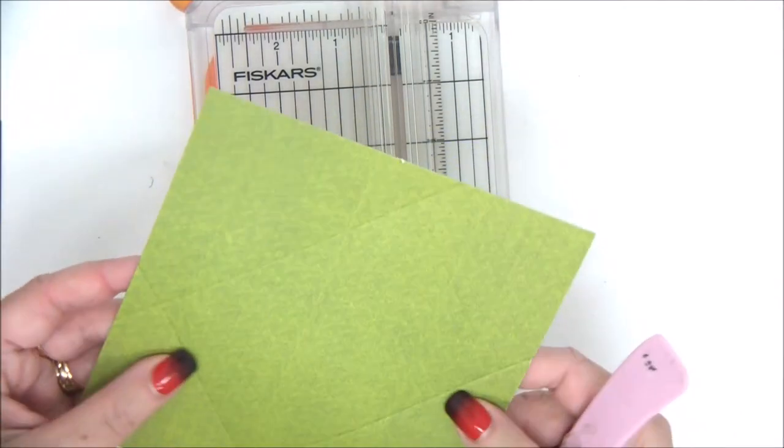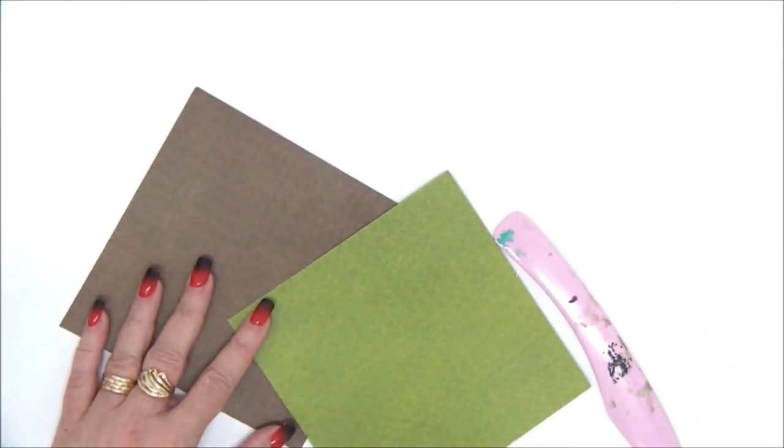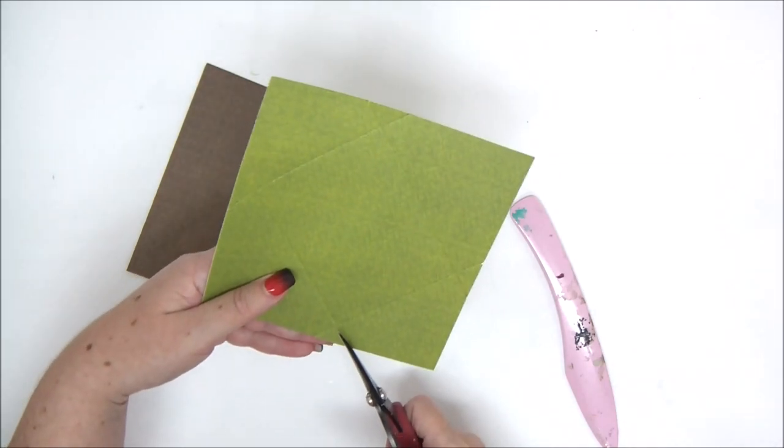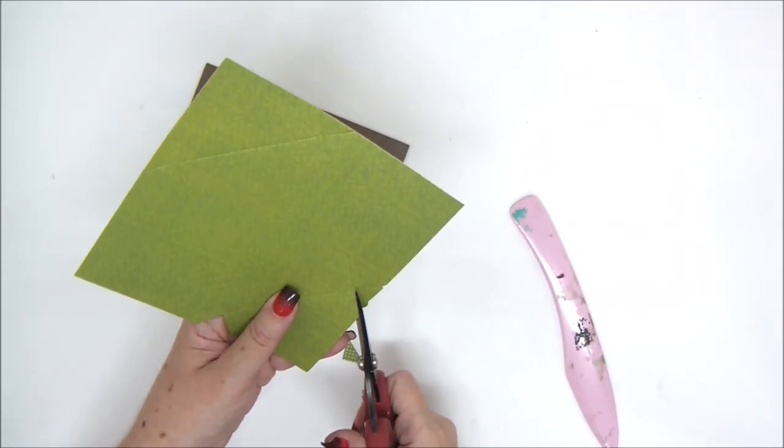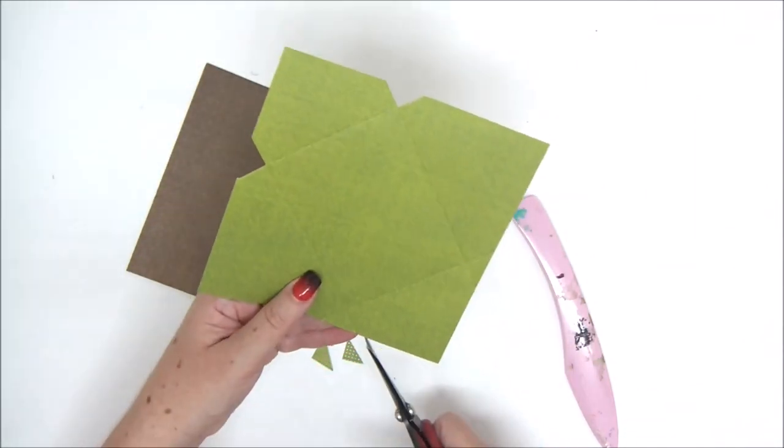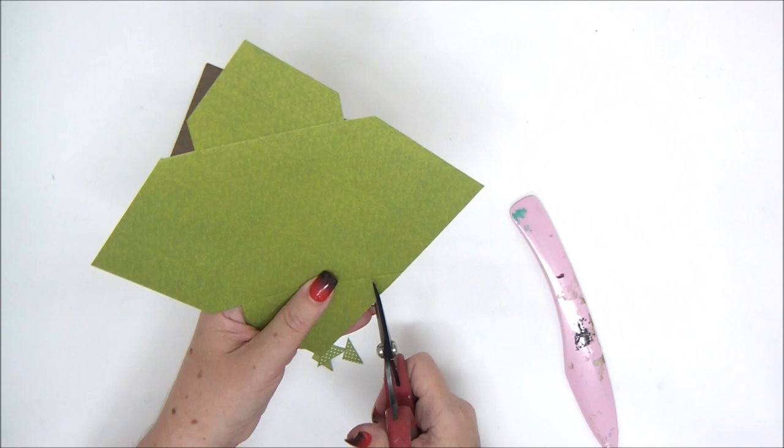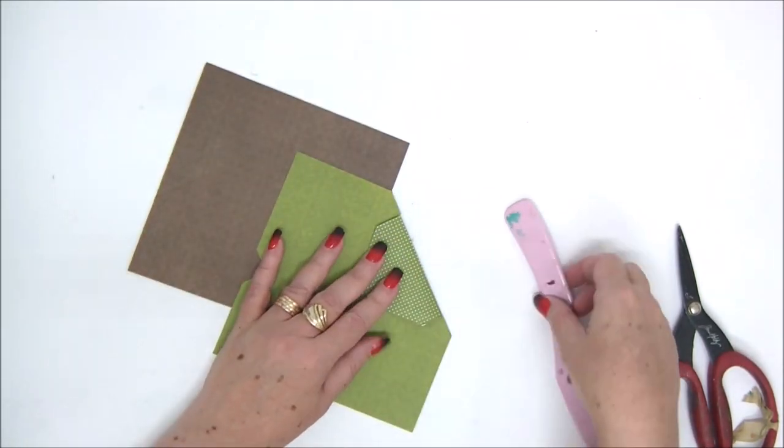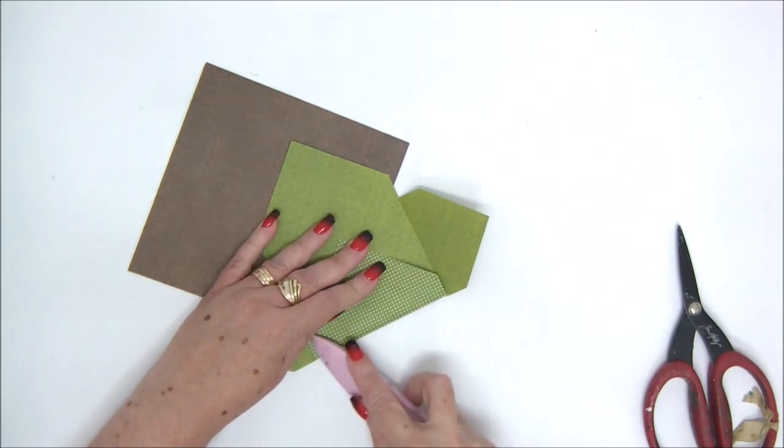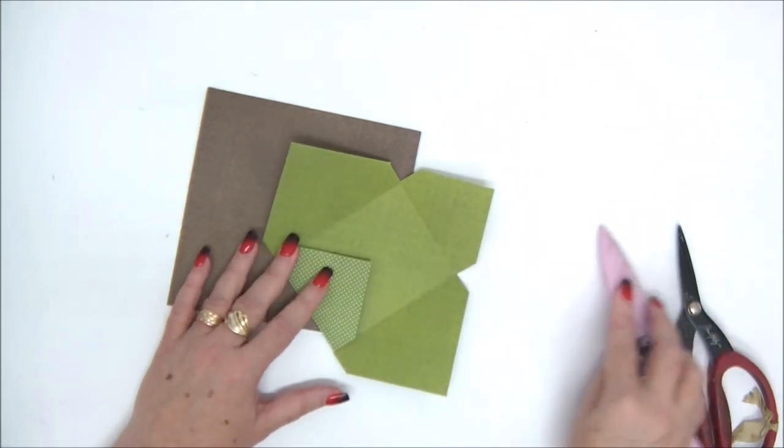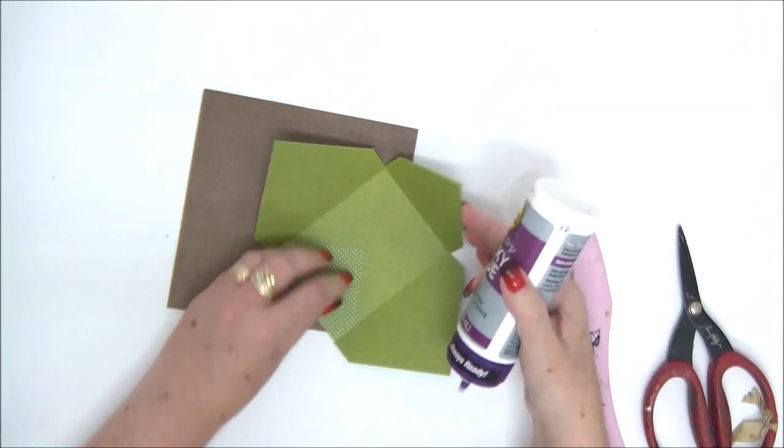So once you have all the lines scored we can go ahead and make our envelopes. What we need to do is you will see that where the score lines meet you have a little triangle and we're going to cut out this triangle. There's four of them. So we're going to cut all four triangles on all four sides. Once you've done that you can go ahead and fold on all the score lines. And basically that is your envelope. You can also make it from just one sided pattern paper where the other side is white because we're not going to see the white part of the paper. So it's up to you.